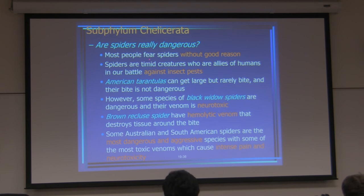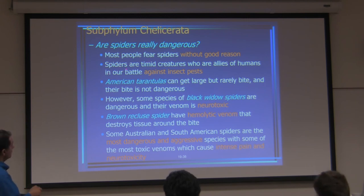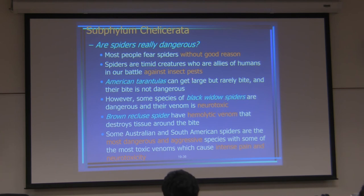Are all spiders really dangerous? Most people fear spiders without good reason. Spiders are actually allies of humans in our battles against insects. That American tarantula is not that dangerous. However, some tarantulas and black widows have neurotoxic venom. Brown recluse spiders have hemolytic venom that destroys tissues around the bite site. Australian and South American spiders are the most dangerous and aggressive species, with highly toxic venoms causing intense pain and neurotoxicity.